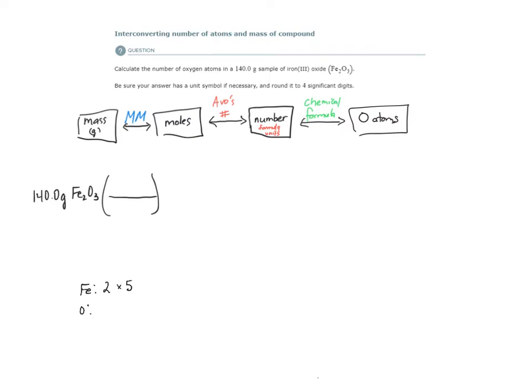and each iron atom has an atomic mass of 55.845 AMUs. I have three oxygen atoms, and each oxygen atom has an atomic mass of 15.9994 AMUs.